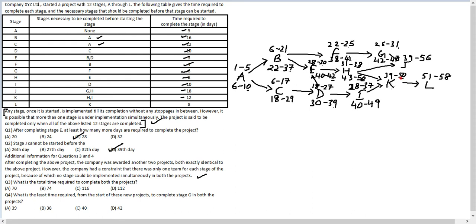For project 2, stage K has constraints at days 50 and 49, so it starts on day 51 and goes to day 62. Stage L has constraints at days 58 and 62, starting on day 63 and going to day 70. Stage J has constraints at days 47, 50, and 56, so it starts on day 57 and goes to day 74.